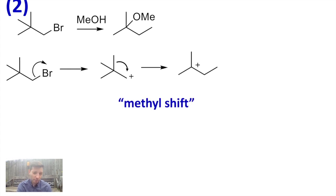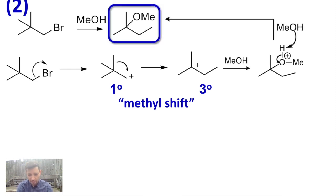And again, the cation got better. It went from primary to now tertiary. So it got better. And more importantly, it explains the product. Methanol will attack that cation. We lose that last H and you get to your substitution product with this rearrangement.